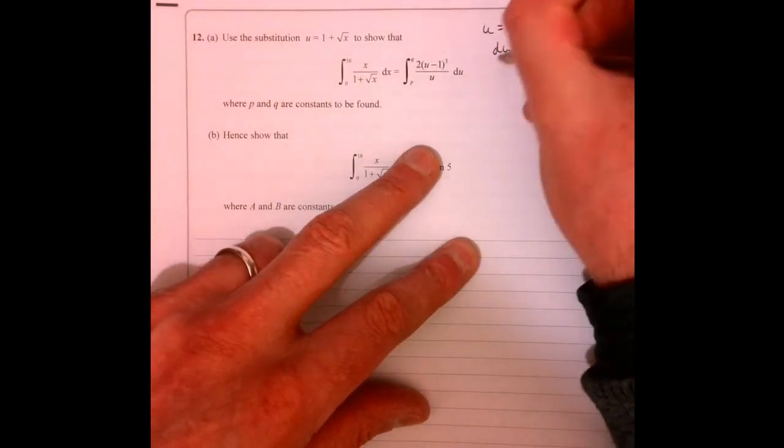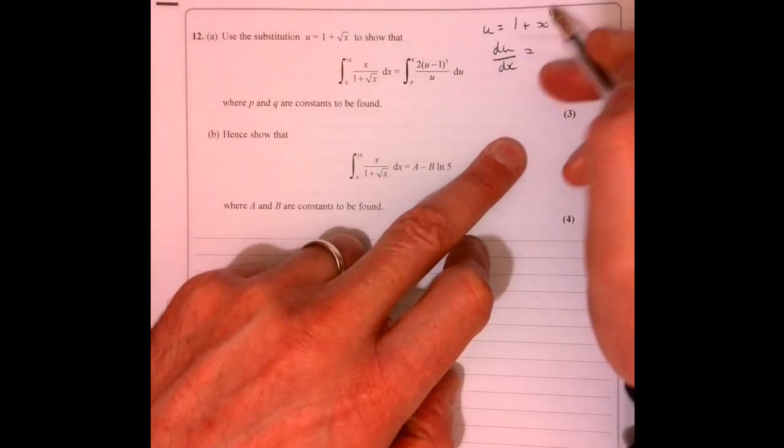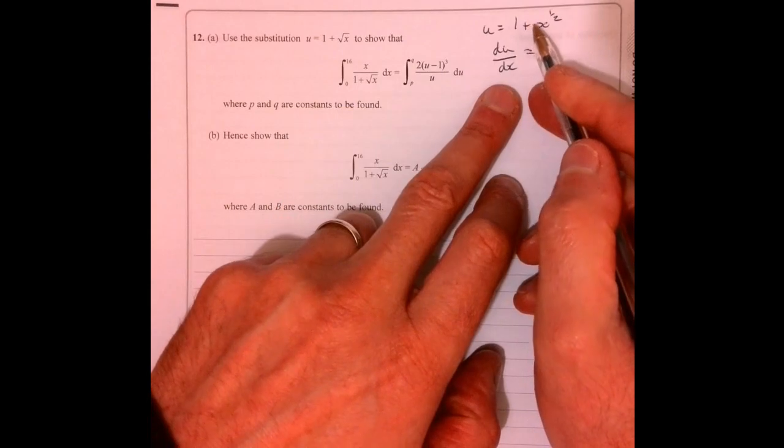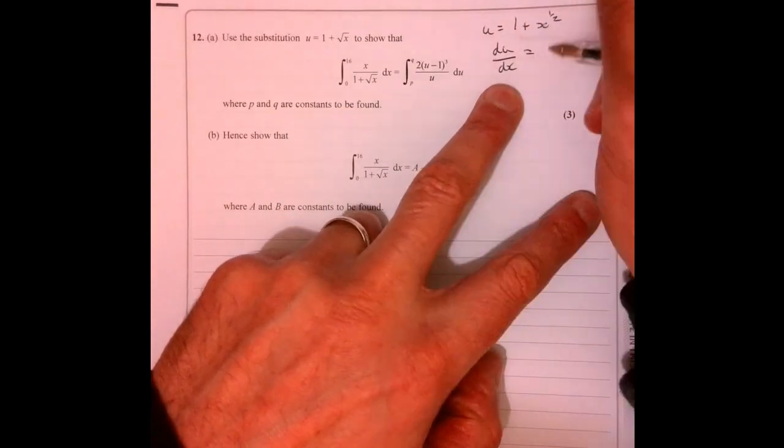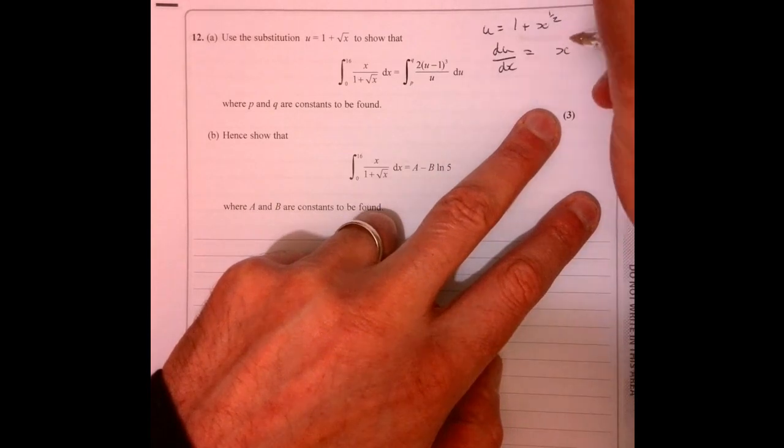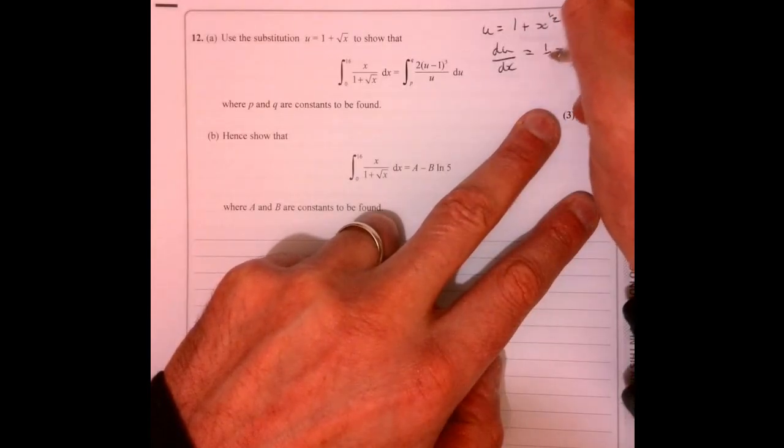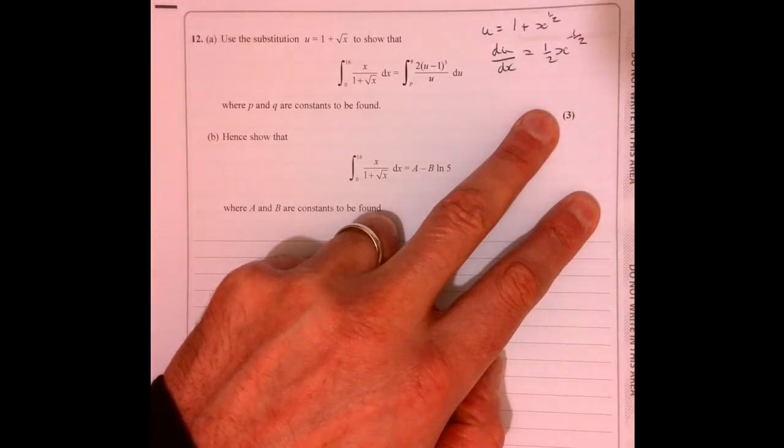So if I see this, I'm thinking, well, I wonder what du over dx is. In other words, it's a bit weird because we're integrating, but I'm telling you to differentiate this. So if I differentiate this, then we get drop the power and multiply by that half. There we go.